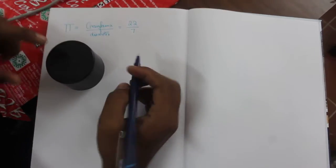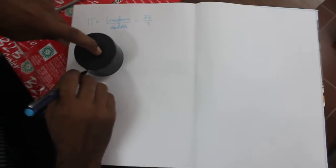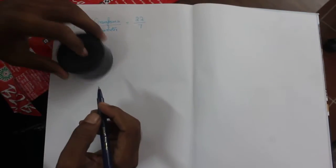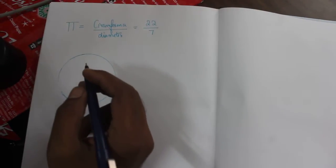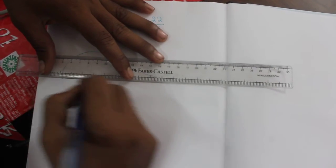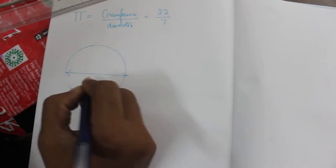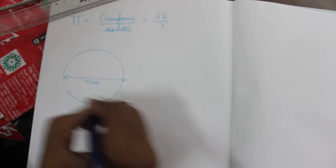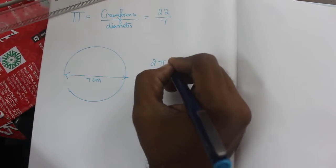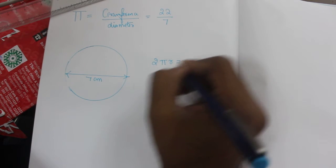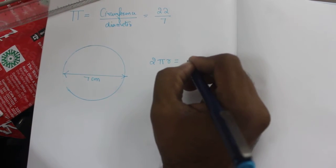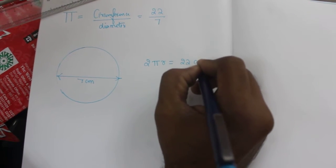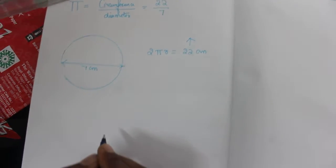For example, this is the circle. Now assume that the diameter of this circle is 7 cm. If you apply the formula for circumference, 2 pi r, you get the answer 22. So this is the circumference of the circle.